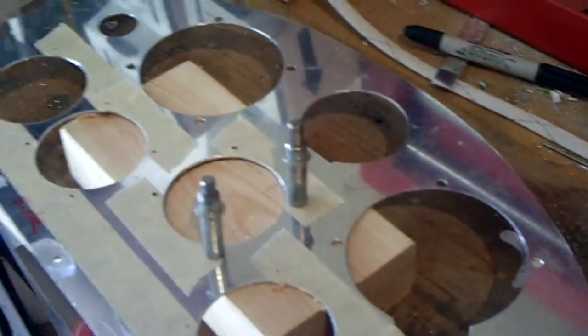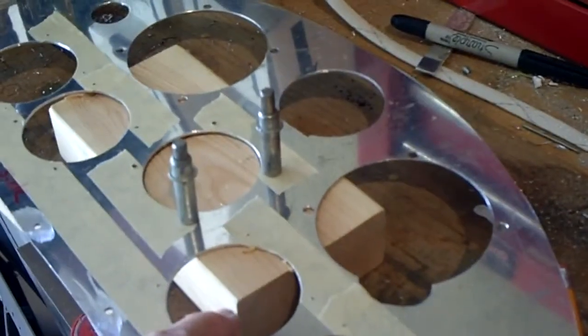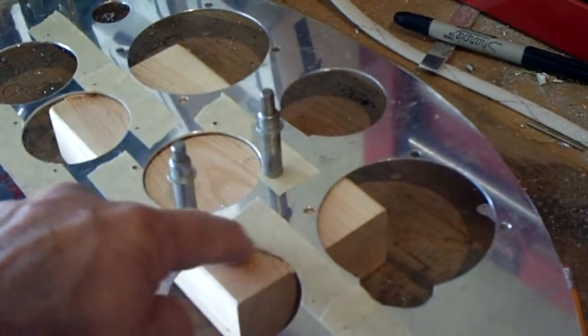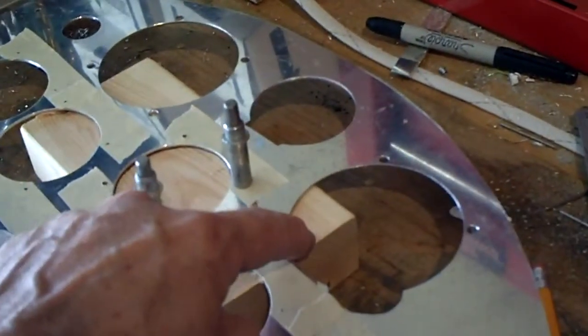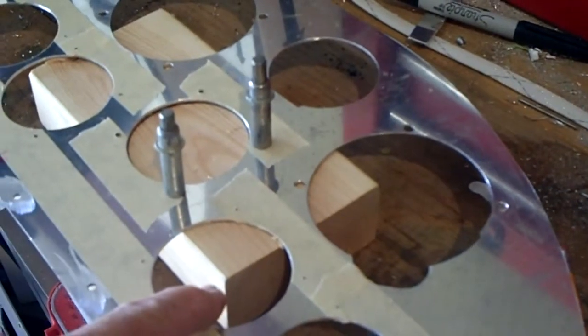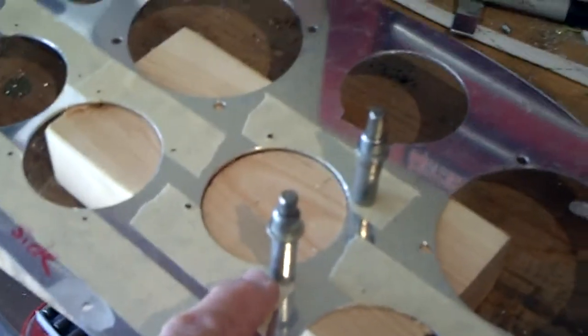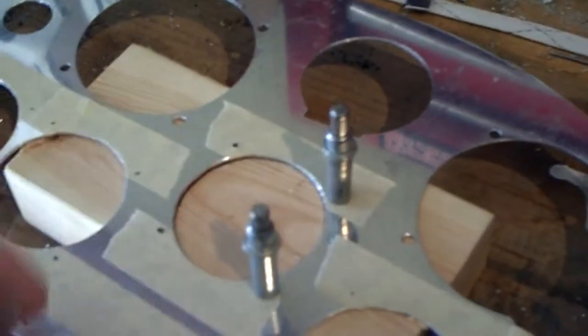I've cut all the holes out in my instrument panel. I've used both a two and a quarter inch hole saw and a two and a half inch hole saw, which allowed me to cut out the major holes. Now I'm going to be drilling out the holes for the mounting screws.